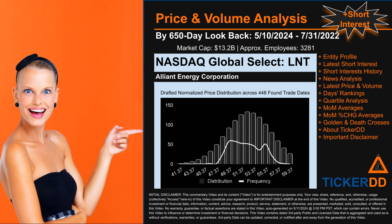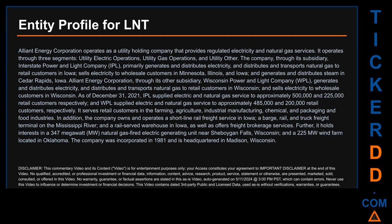Hello, my name is Carl. I searched the public web to find information about the company behind this ticker. Alliant Energy Corporation operates as a utility holding company that provides regulated electricity and natural gas services. It operates through three segments: utility electric operations, utility gas operations, and utility other. The company, through its subsidiary Interstate Power and Light Company (IPL), primarily generates and distributes electricity and distributes and transports natural gas to retail customers in Iowa.